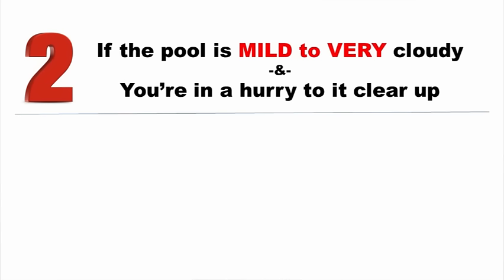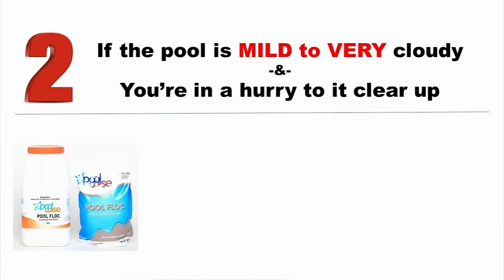More commonly, we're going to use these next two options. If the pool is mild to very cloudy and you're in a hurry — say you've got a birthday party in three days or family coming to visit — we're going to use what we call a pool flock. What flock does is we put it in the water and it causes all that microscopic debris floating in the water to become more dense. As it becomes more dense overnight, it's going to sink to the bottom. Then you'll go out, the pool will be crystal clear, but you'll have a cloudy film on the floor. You vacuum that out and you're done.